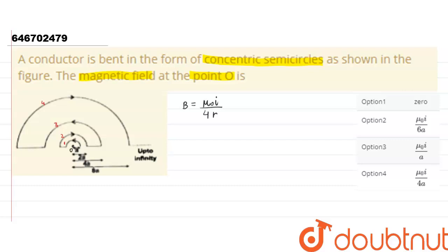As we can see, in semicircle 1 the current is in the anticlockwise direction, so the magnetic field will be coming outward. Assuming outward (dot) to be positive and cross (inward) to be negative, we can say that the magnetic field due to loop 1 will be positive, loop 2 will be negative, and so on.